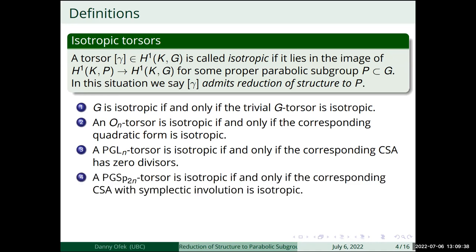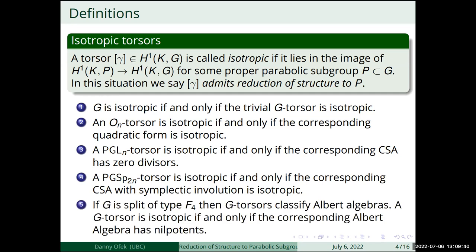The projective symplectic group torsors classify central simple algebras with symplectic involution, and again this notion coincides with the classical notion of isotropy. We also have one example from the exceptional groups: if G is split of type F₄, then G-torsors classify Albert algebras, and the G-torsor is isotropic if and only if the corresponding algebra admits nilpotence.